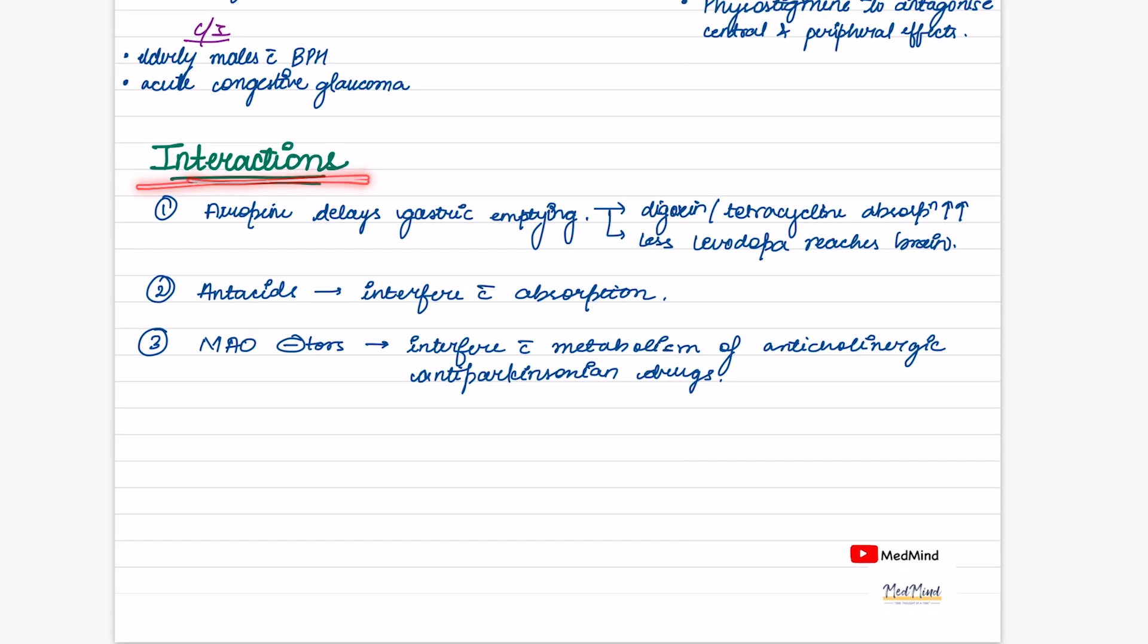Last we have interactions. Atropine delays gastric emptying, therefore levodopa will get less to the brain. Antacids interfere with the absorption of atropine. MAO inhibitors interfere with metabolism of anticholinergic anti-Parkinsonian drugs.